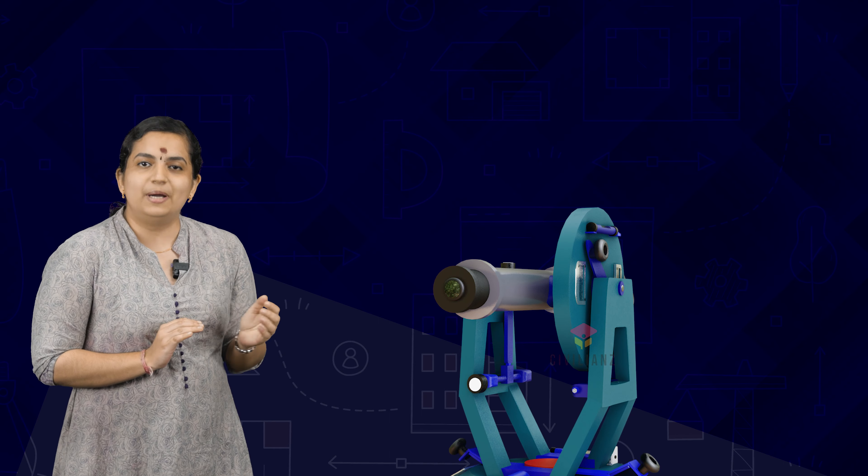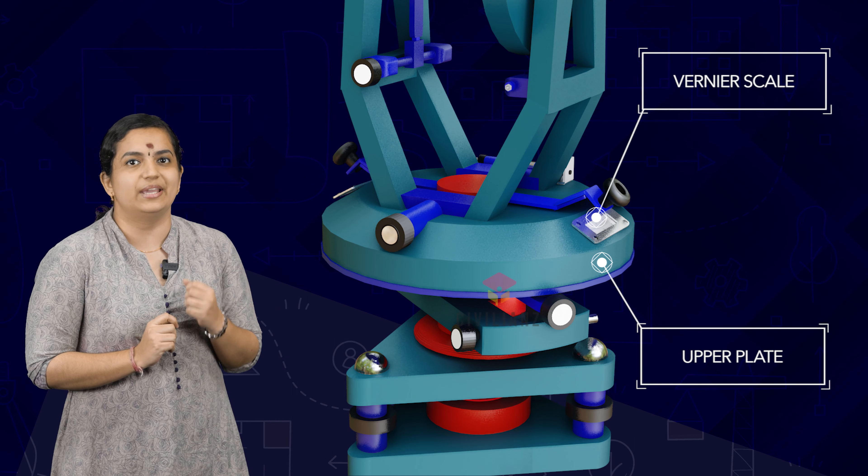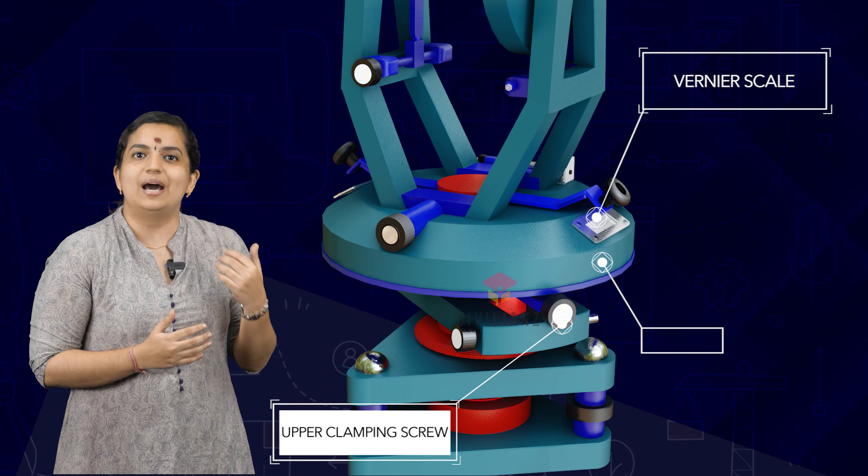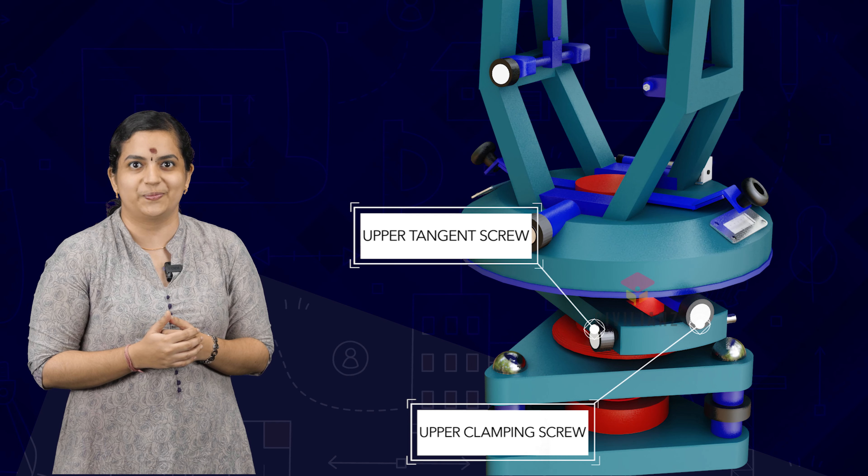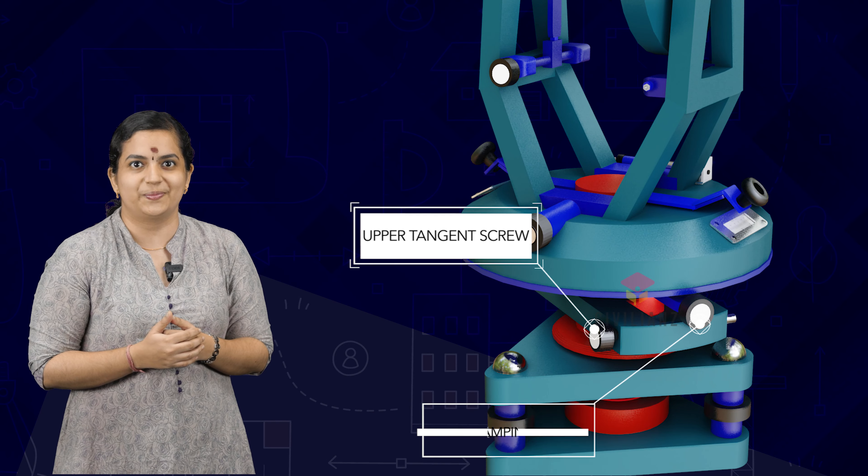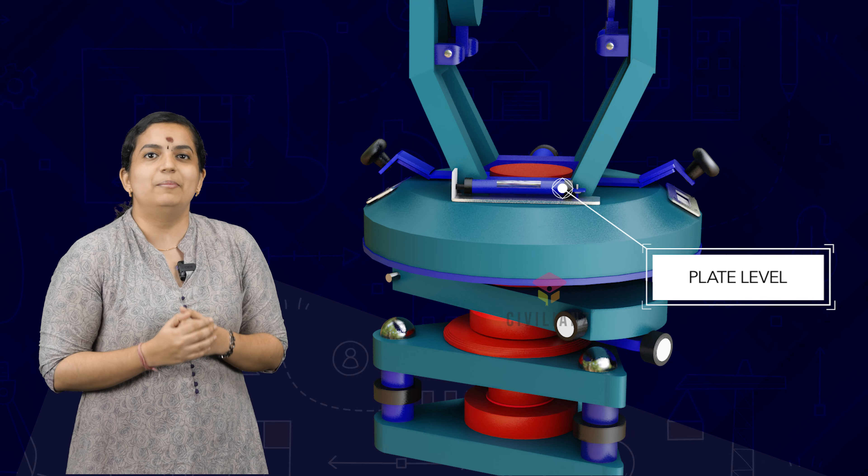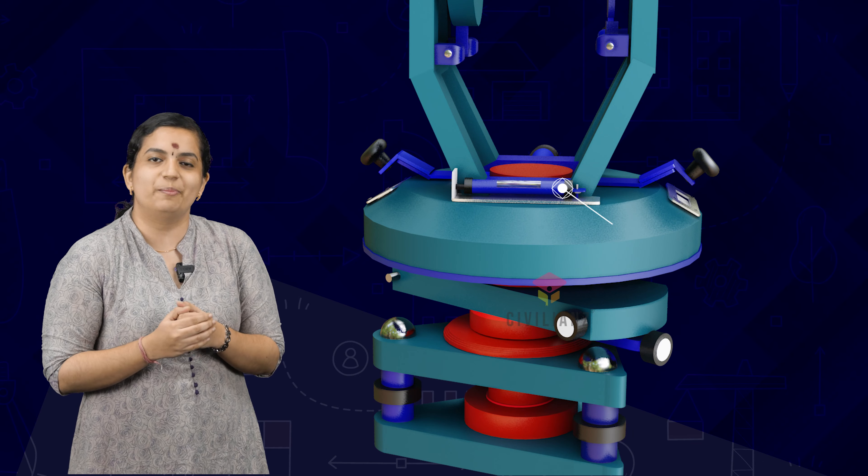The upper plate of the theodolite carries two verniers with magnifiers placed at two extremities diametrically opposite. The upper plate also carries an upper clamping screw and the corresponding slow motion screw or tangent screw. Two bubble tubes placed at right angles to each other on the upper plate are called plate levels, the bubble in which can be made central to make the vertical axis of the theodolite truly vertical.